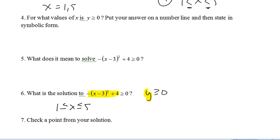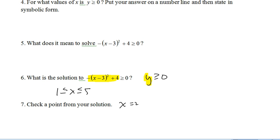And let's check a point from our solution. Let's say 2. And let's make sure that that makes our inequality true. So, negative 2 minus 3 squared plus 4 greater than or equal to 0. So, we get negative 1 plus 4 is greater than or equal to 0. 3 is greater than or equal to 0 is true. And that's going to be true for all the infinite points in between and including 1 to 5. They will all make this inequality here true.